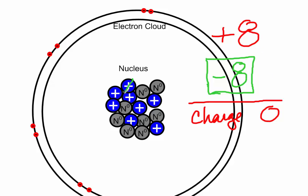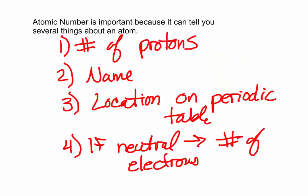If it helps you, you can go through and cross them out — cross each proton with an electron — and you'll see that it's 1, 2, 3, 4, 5, 6, 7, 8.